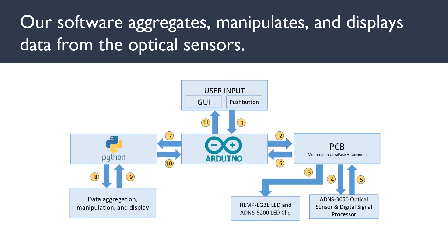In terms of our software system, this schematic outlines the flow of information through our system. First, user input is generated through the GUI and a push button on the device. These signals are then sent to two Arduinos, each of which turns on one LED and tells one ADNS sensor to start recording raw position data. Then the data from these two Arduinos are aggregated onto one Arduino, which makes our downstream processing much more simple. The position data is sent to Python where it is manipulated, and then the user can visualize, save, and reopen data using the GUI.